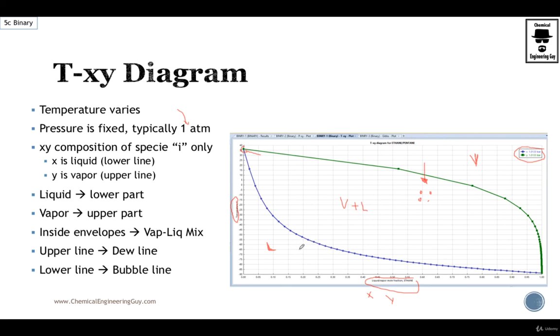The lower line, which is the blue one, implies that you have only liquid. And whenever you get the first bubble, it will go up. This is the temperature at which we assume the bubble line is achieved.